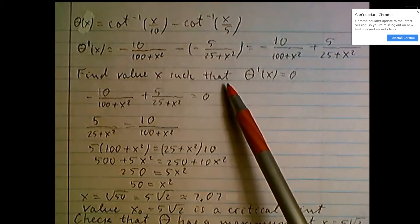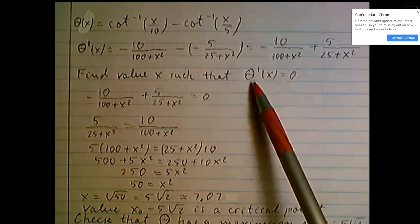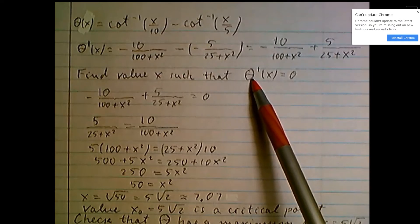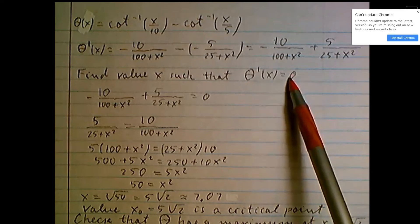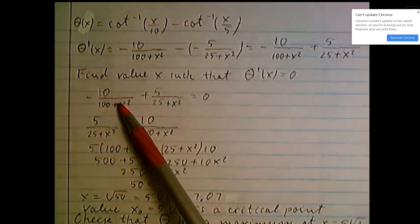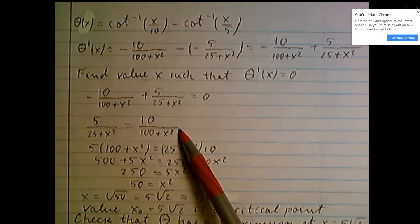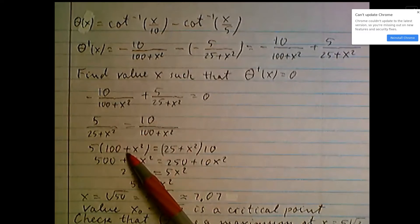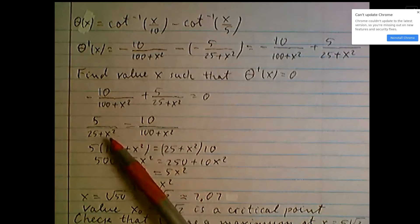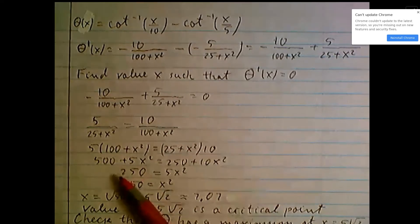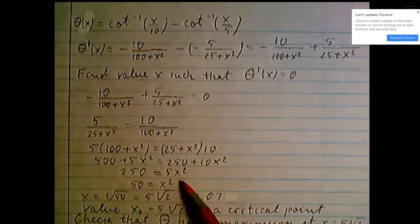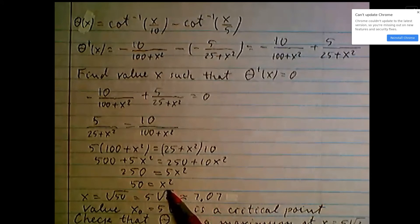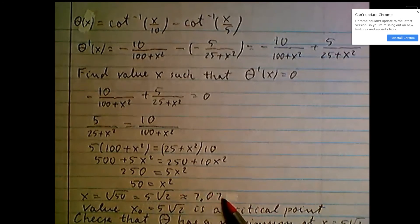Find the value x such that derivative of theta equal 0. Let's take this expression equal 0, rewrite in this form, solve as proportion, use cross products: 5 times 100 plus x squared equal 25 plus x squared times 10. Open parenthesis, simplify: 50 equal x squared, so x equal square root of 50 or 5 square root of 2, approximately 7.07.